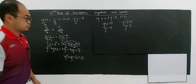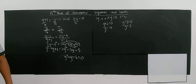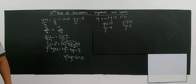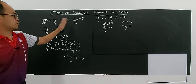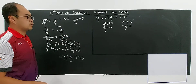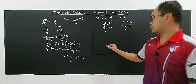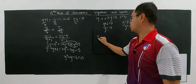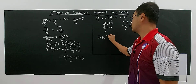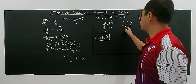Now the question asks you to write down the corresponding values of the first 3 terms. So this is the fourth, fifth, and sixth term that were given. The question requires you to find T1, T2, and T3 for each value of y.